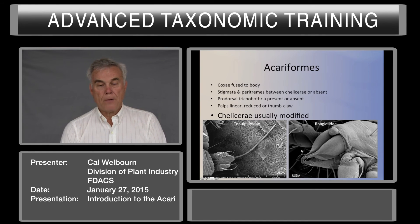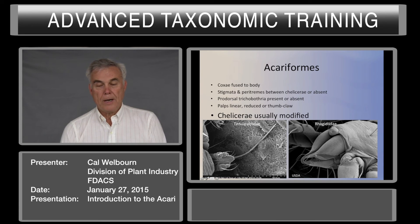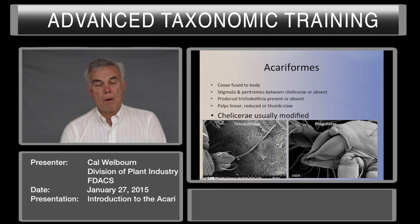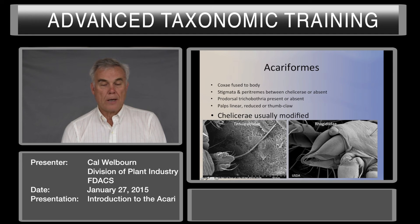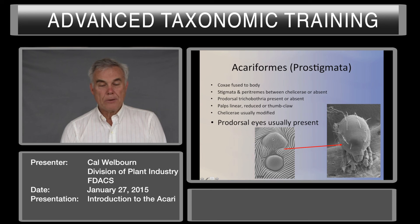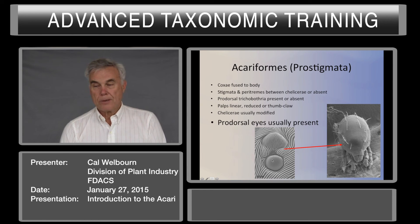Chelicerae are usually modified. Primitively, the chelicerae can be chelate with a fixed digit, movable digit, and cheliceral base. Most acariformes, especially the Prostigmata, have modified chelicerae — the two movable digits are modified into a long stylet-like structure. Prodorsal eyes are usually present. They don't actually see images; we believe they can tell light and dark, but they don't use them to actually see images.